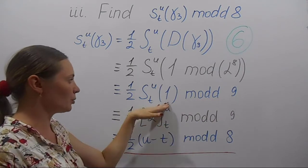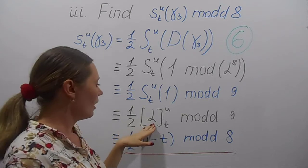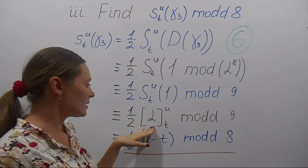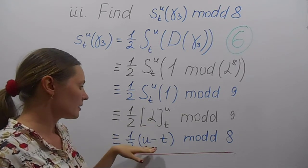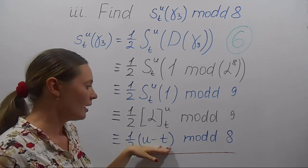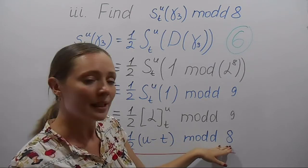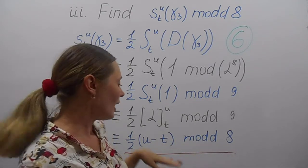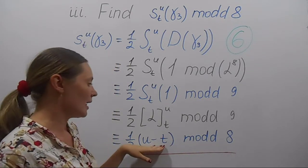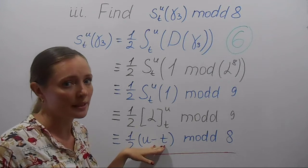Now we integrate 1 and get α, which is the same as the difference u−t. Here we can write mod d8, since we don't have any 8th power of u and t in this expression.